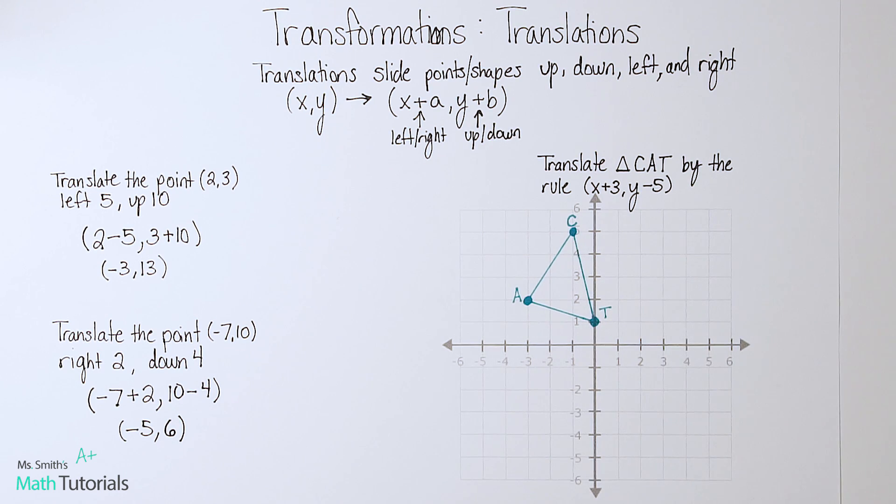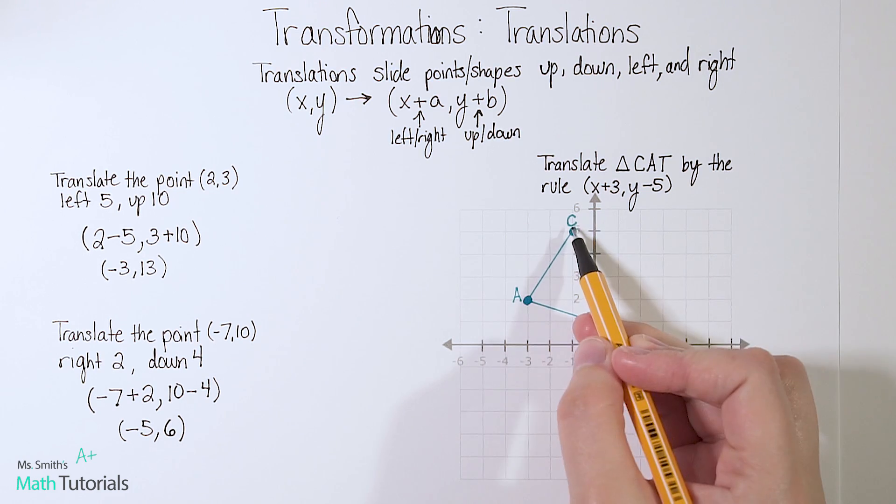So some students like to just count. If they've got a picture in front of them, they like to count, okay I'm going to take this point C, and I'm going to move right 3, and I'm going to move down 5. You can totally do that. I just like to show you both methods. So the other method is going to be to actually write each of these points out, complete the rule, and then plot our new points. In this case, counting would be faster, I completely agree, but I do want to show you both.